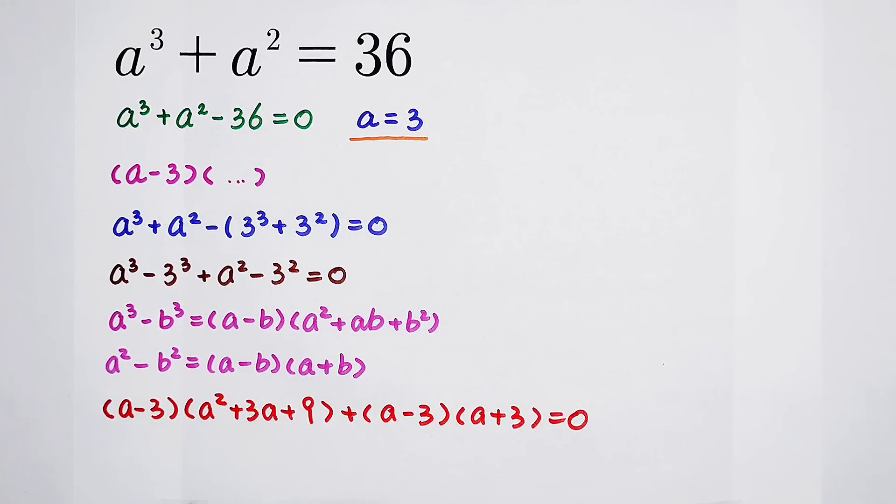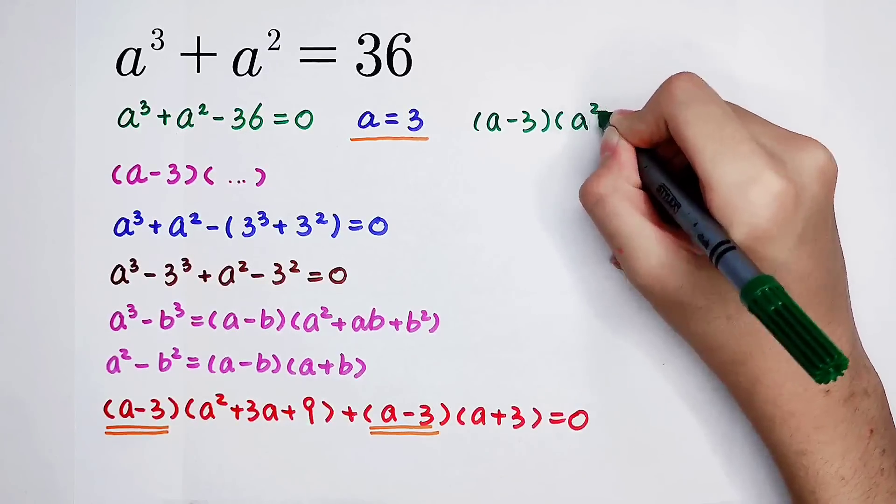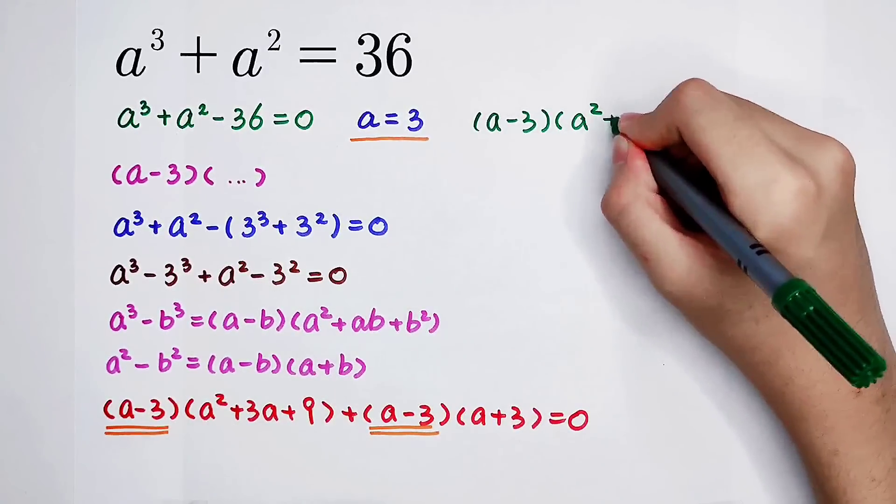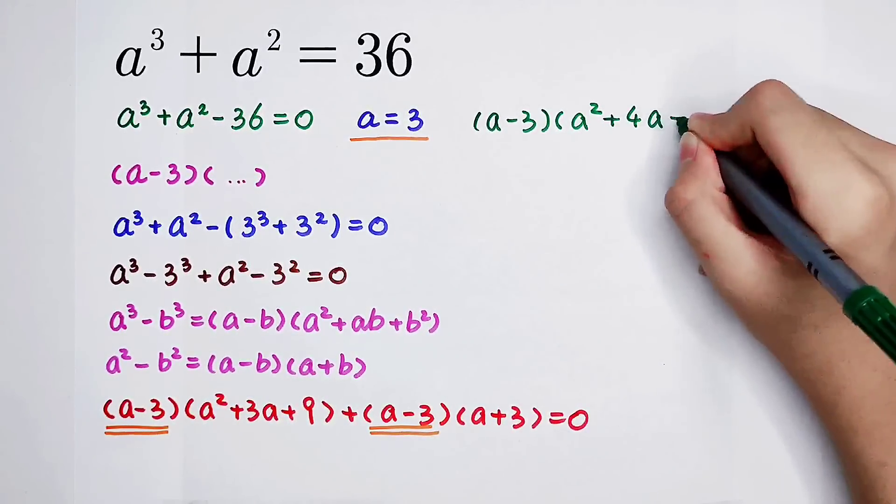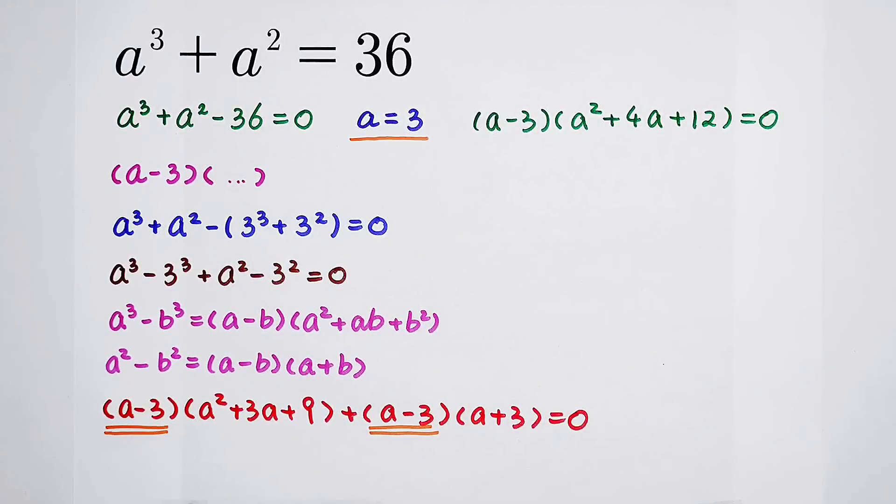Okay, now have a look at it. The left-hand side has two factors. So (a minus 3) times (a squared plus 4a plus 12) equals 0. And then here we have two cases: the first case and the second case.